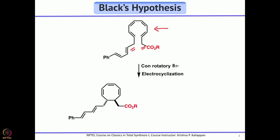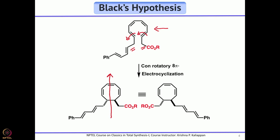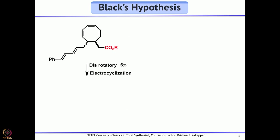After the conrotatory 8π electrocyclization, if you look at the resulting compound you can see a conjugated triene. The conjugated triene under the same thermal conditions can further undergo electrocyclization. Since it is a 6π electron system, disrotatory electrocyclization is allowed, giving the next intermediate. Though this was not isolated, Black proposed it as endiandric acid E, which should be the precursor for one of the endiandric acids.